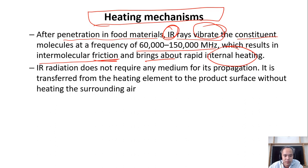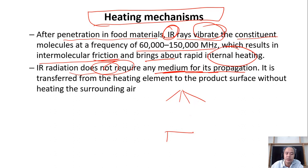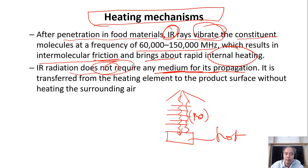Irradiation does not require any medium for its propagation. So if you generate the radiation here, and put your food there, the food can get hot even if the space between is an absolute vacuum — there is nothing in the middle, but the radiation can propagate and move to the food. You don't need a medium. This means when you do this technology, you don't even need to heat the air — you can propagate the radiation directly into the food.